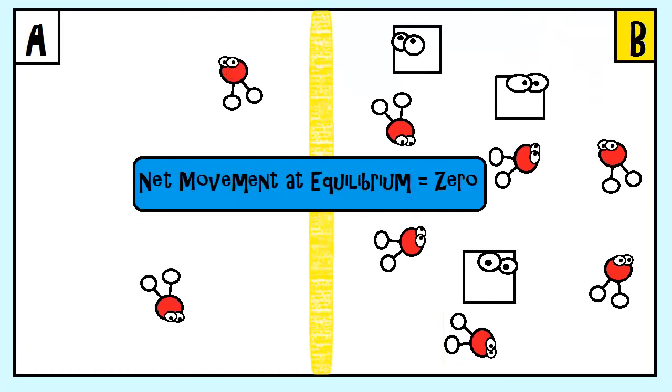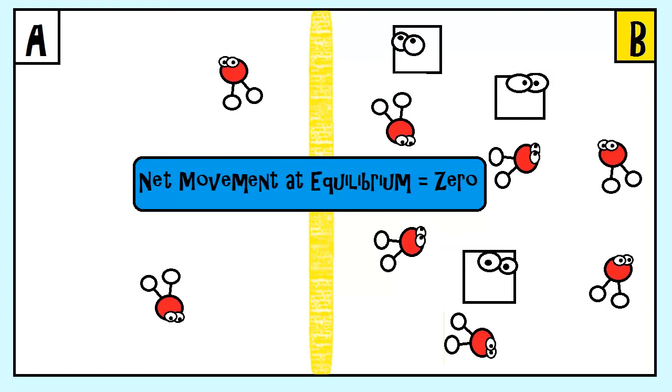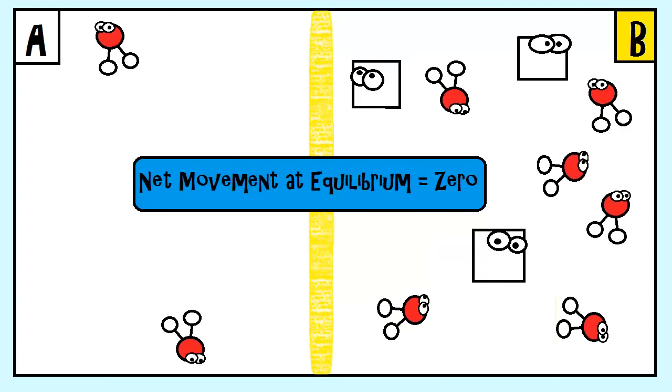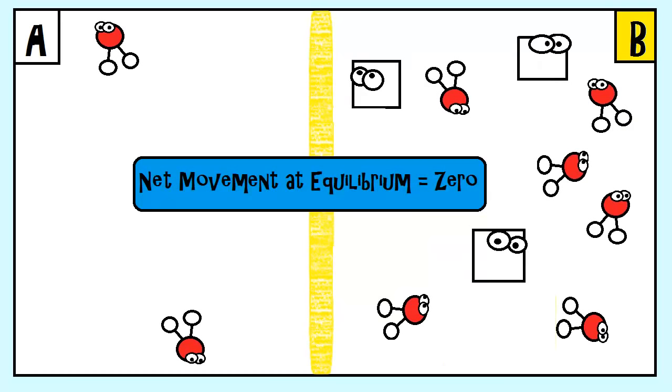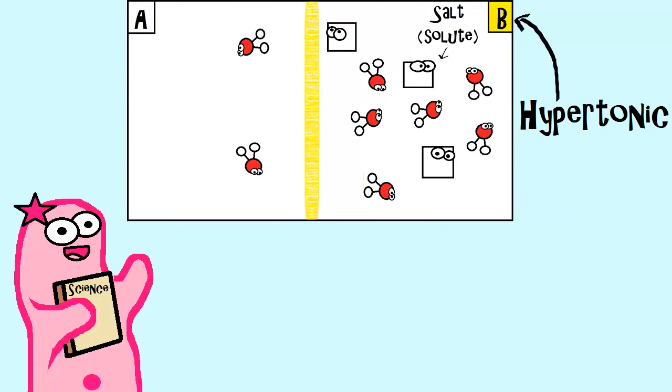Once equilibrium is reached, the net movement of water on the two sides will be zero. But remember that water still likes to move, and movement still occurs. Here's some vocabulary to know. We call side B hypertonic.